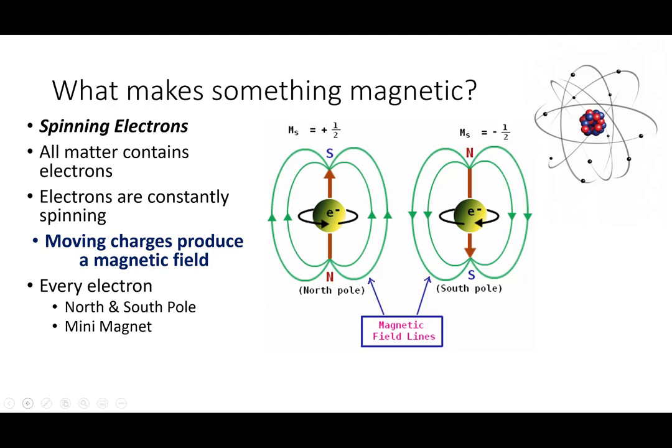So what makes something magnetic? The quick answer and the thing that I want you to put a star by is this: spinning electrons. This is what they have encountered.